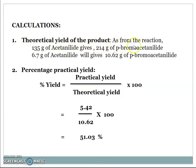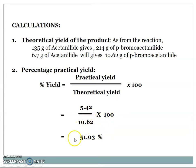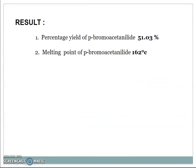Calculation: Theoretical yield — from the reaction, 135 g of acetanilide gives 214 g of para-bromoacetanilide. Therefore, 6.7 g of acetanilide will give 10.62 g of para-bromoacetanilide. Percent practical yield formula: percent yield = (practical yield / theoretical yield) × 100 = (5.42 / 10.62) × 100 = 51.03%. Result: percentage yield of para-bromoacetanilide is 51.03% and the melting point is 162°C.